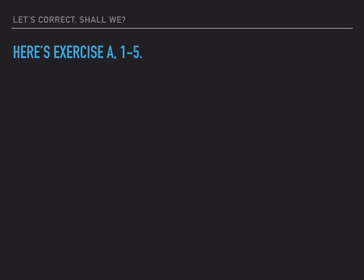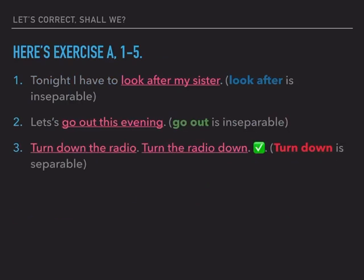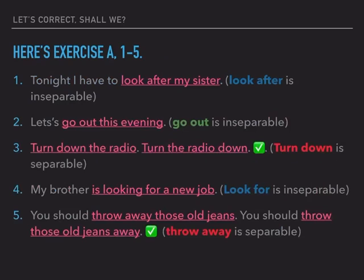Let's correct. Exercise A, sentences 1 to 5. Number one: Tonight I have to look after my sister — only this option is correct because look after is inseparable. Number two: Let's go out this evening — only one option is correct; go out is inseparable. Number three: Turn down the radio / Turn the radio down — both are correct because turn down is separable, it's a red one. Number four: My brother is looking for a new job — look for is inseparable, so only 'looking for a new job' is correct. Number five: You should throw away those old jeans / throw those old jeans away — both are correct because throw away is separable.